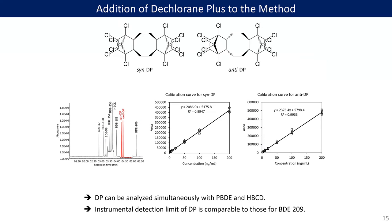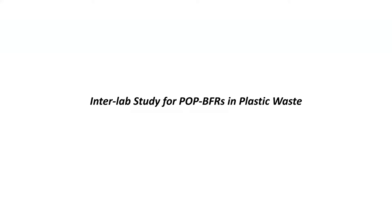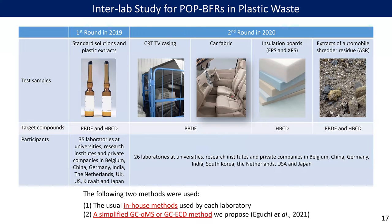We also added Dechlorane Plus to this simplified method and confirmed that DP can be analyzed simultaneously with PBDEs and HBCD. Moving to the next topic: an interlaboratory study for PBDEs and HBCDs in plastic waste, to evaluate the accuracy of the simplified GC method and to introduce it as widely as possible to contribute to proper management of global plastic waste containing brominated flame retardants.